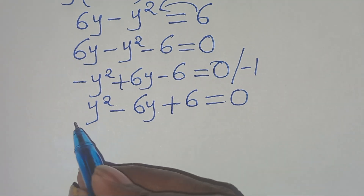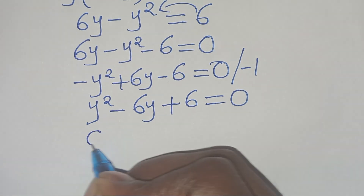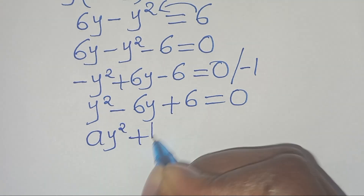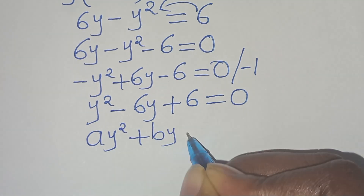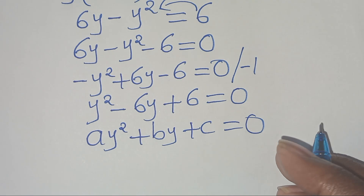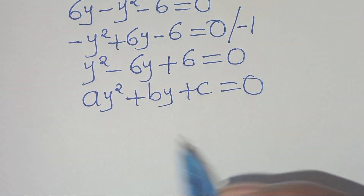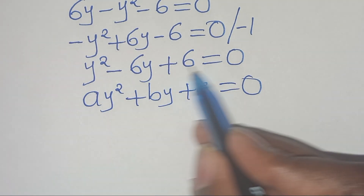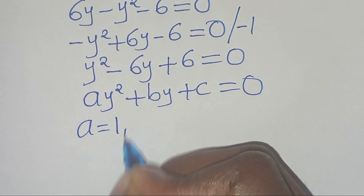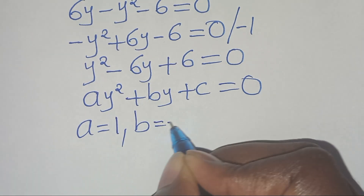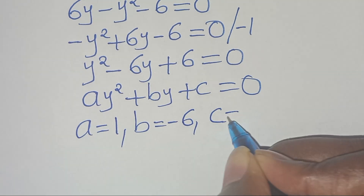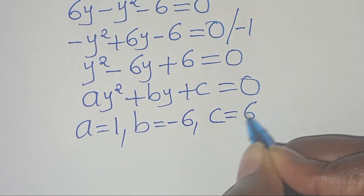This is a quadratic equation of the form ay squared plus by plus c equals 0. From this quadratic equation, we have a equals 1, b equals minus 6, and c equals 6.